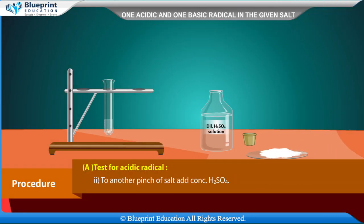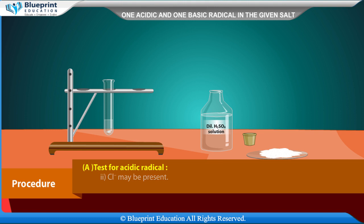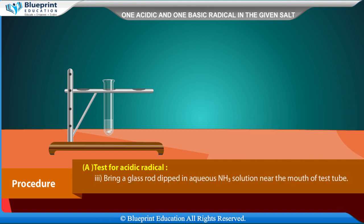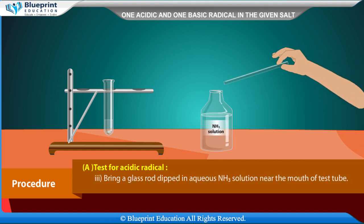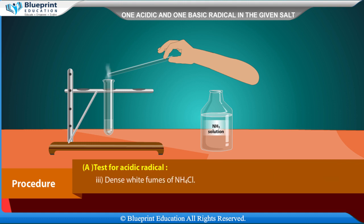To another pinch of salt, add concentrated H2SO4. Observation: pungent smelling gas having choking smell is given out. Inference: Cl- may be present. Bring a glass rod dipped in aqueous NH3 solution near the mouth of the test tube. Observation: dense white fumes of NH4Cl. Inference: Cl- may be present.